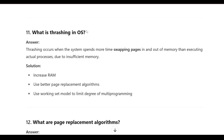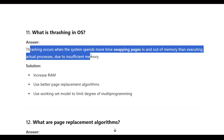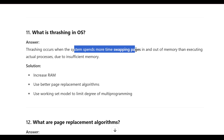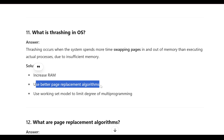What is thrashing in OS? Thrashing occurs when the system spends more time swapping pages in and out of memory than executing actual processes, due to insufficient memory. The solution is to increase RAM, use a better page replacement algorithm, or use the working set model to limit the degree of multiprogramming.